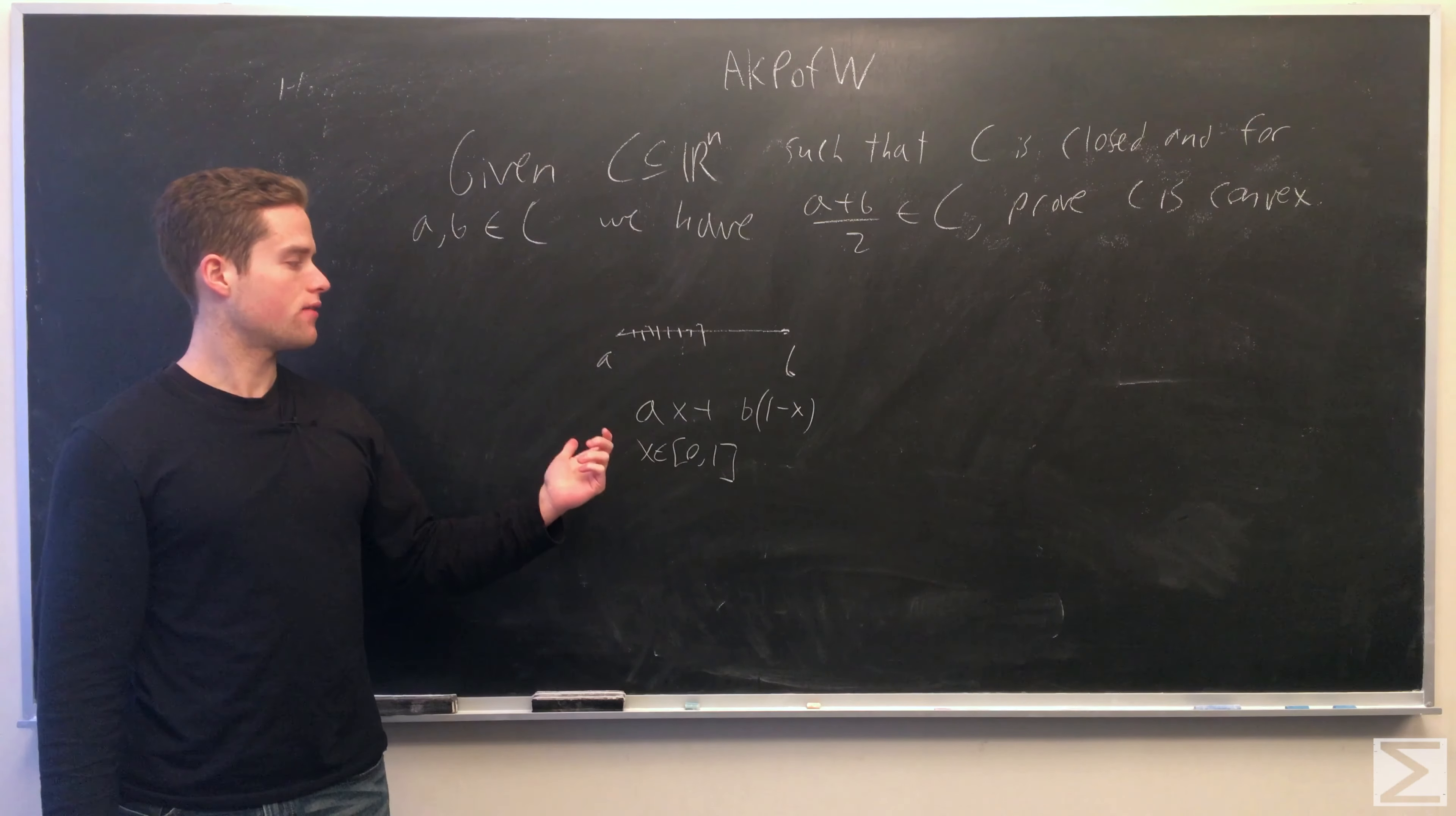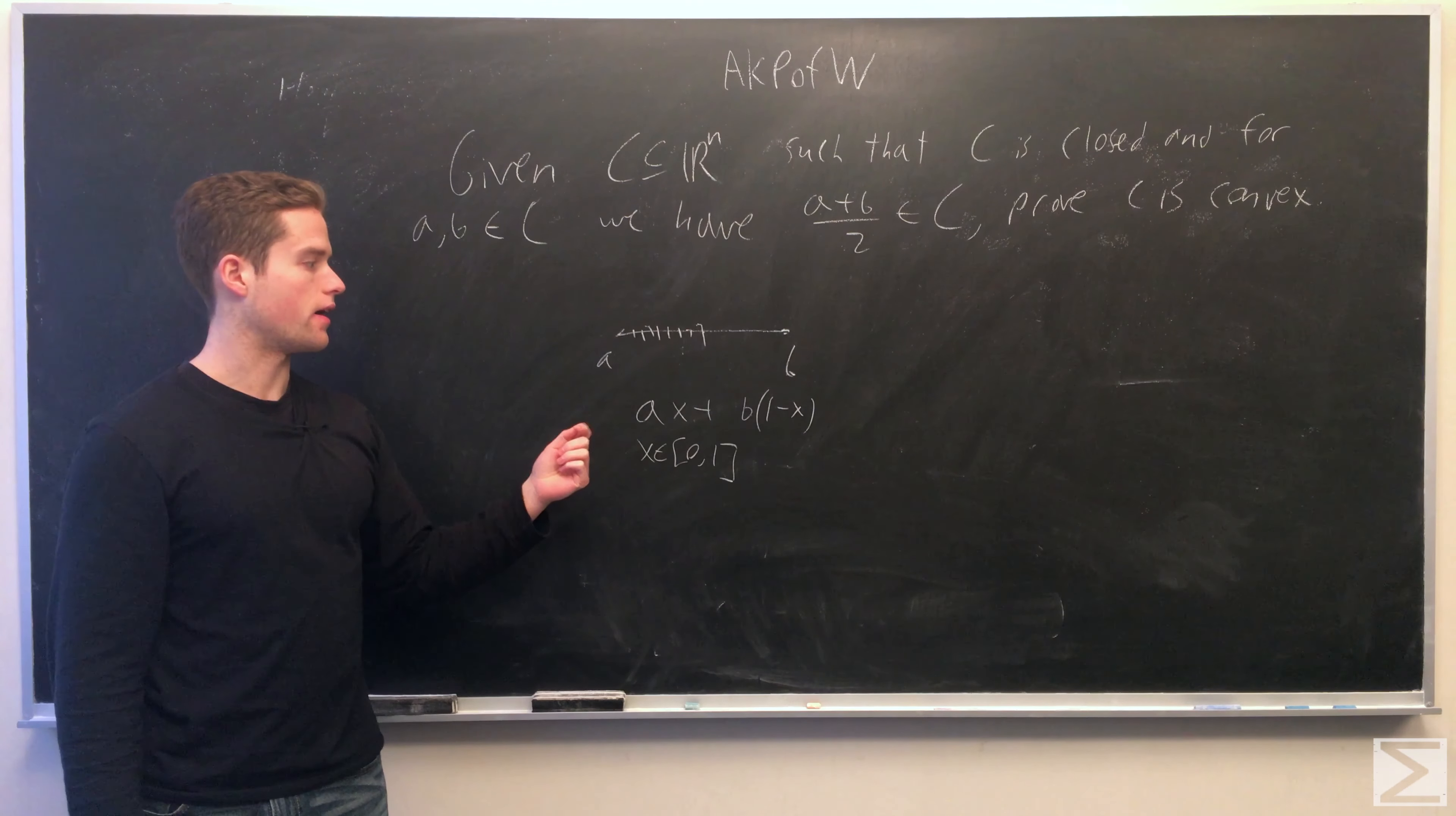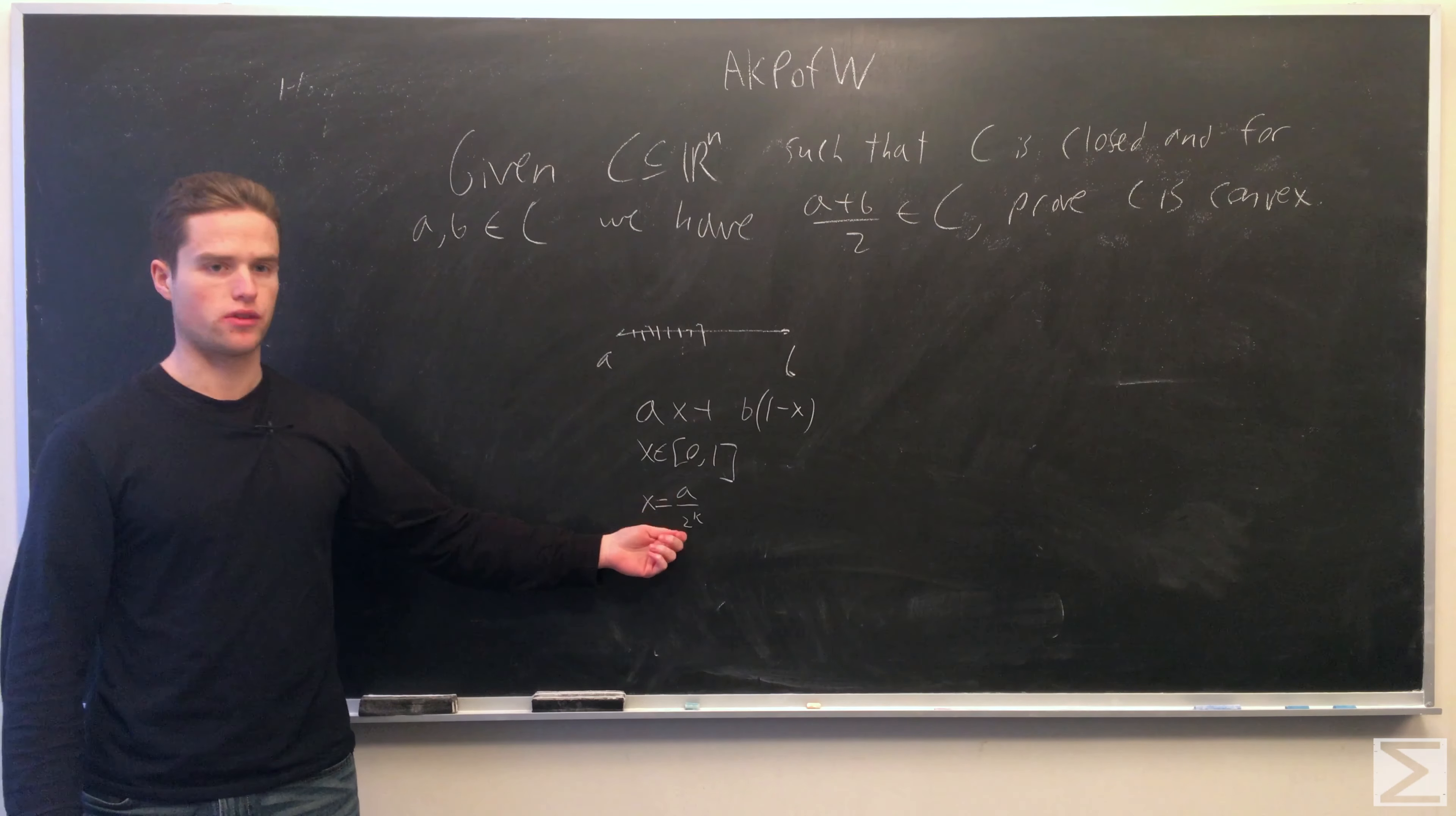We can see that as we take midpoints of midpoints, this condition is equivalent to saying any point where x is a dyadic rational, so the denominators are powers of 2. Once we have all the dyadic rationals, so x is the form a over 2^k, k is any positive integer, a is also any integer such that x is between 0 and 1.